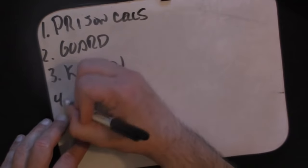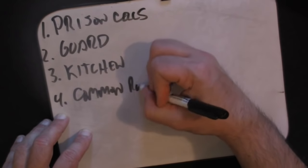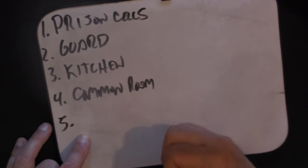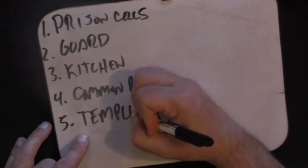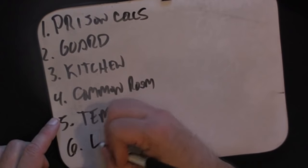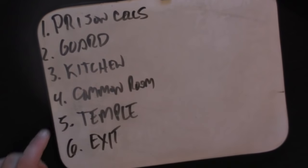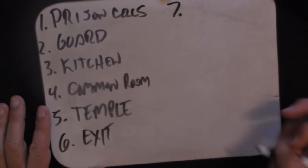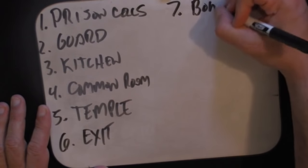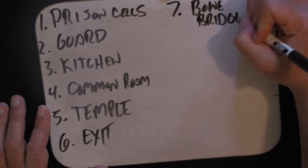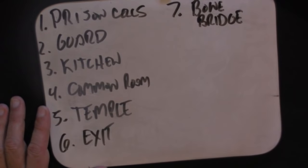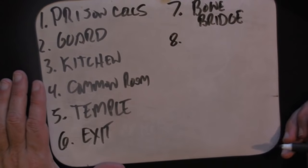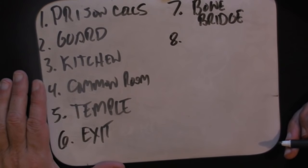Obviously you have prison cells because the characters start as prisoners. They also need a guard room, a common room, a kitchen. I imagine they have some sort of temple, a laboratory where they can create cool, crazy inventions. I'm imagining a cave filled with mushrooms — the goblins use this fungus as their light source, and also to eat it, they use it as vegetable matter.